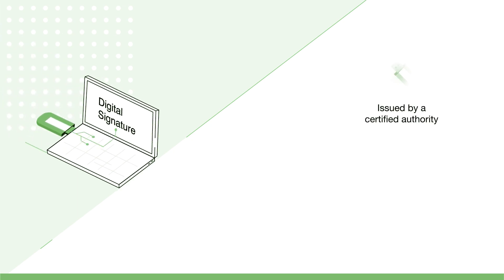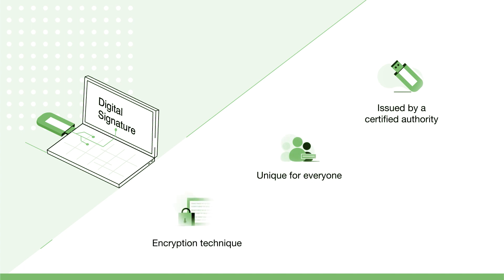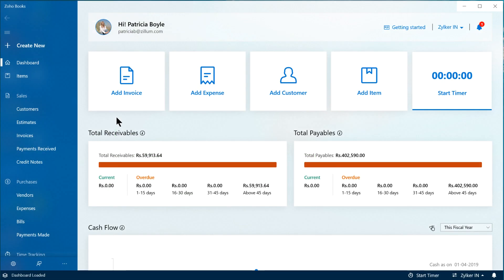On the other hand, a digital signature is issued by a certified authority. It's unique to each person and it uses encryption technique to add a layer of security and authenticity to our documents. In this video, we will see how to authenticate your invoices with a digital signature in the Zoho Books Windows app.